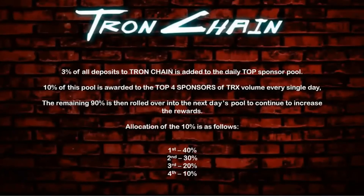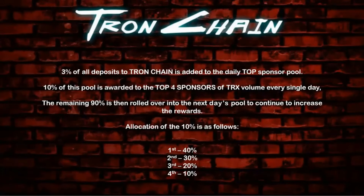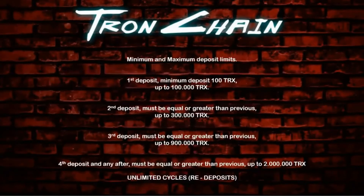There is also a daily top sponsor pool. 3% of all deposits to TronChain is added to this pool daily. 10% of this pool is awarded to the top four sponsors by TRX volume every single day. The remaining 90% rolls over into the next day's pool to continue increasing the rewards. The allocation of the 10% among the top four is: 40%, 30%, 20%, and 10%.